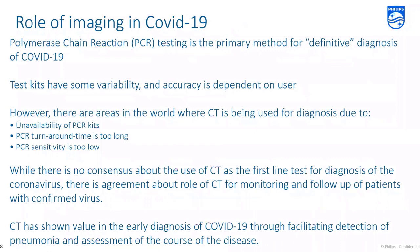The current standard for diagnosing COVID-19 is a polymerase chain reaction, or PCR, test. These test kits do have some variability based on the user. The unavailability of PCR kits, long testing turnaround times, and low PCR test sensitivity have led providers in some areas to look to computed tomography for diagnosis. However, there is no consensus about the use of CT as a first-line diagnostic test for COVID-19. CT has been shown to be an invaluable tool in monitoring and follow-up of patients with confirmed COVID-19 diagnoses, as well as facilitating the early detection of pneumonia in COVID-19 patients.